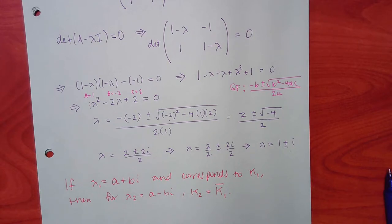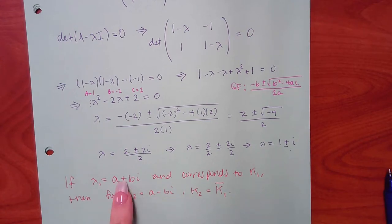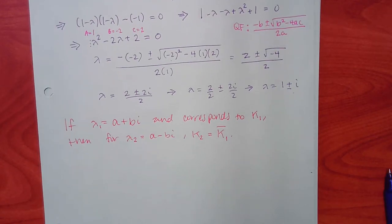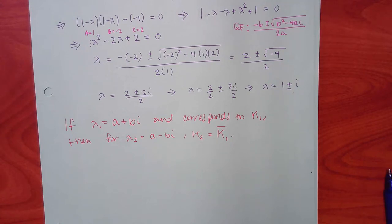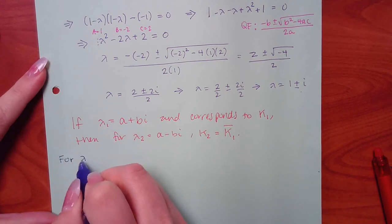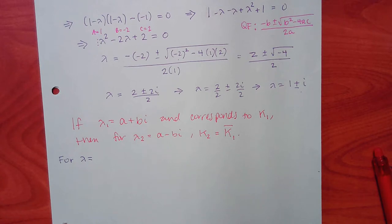So if K1 is [2, 0], K2 looks exactly the same because there are no imaginary parts to flip. Only imaginary parts change sign when conjugating. I usually pick the positive lambda (1 plus i) to work with first.